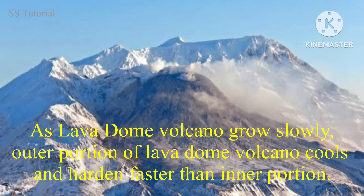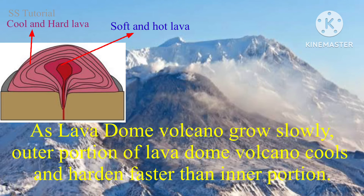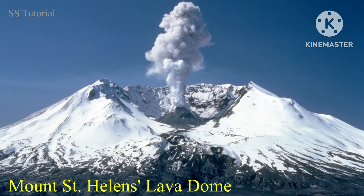As a lava dome volcano grows slowly, the outer surface cools and hardens faster compared to the inner parts. Mount St. Helens lava dome volcano in the USA is one notable example of a lava dome volcano.